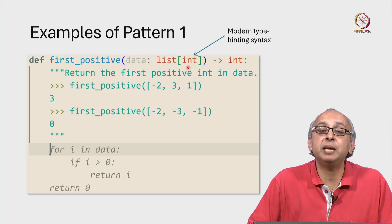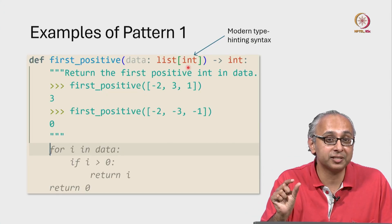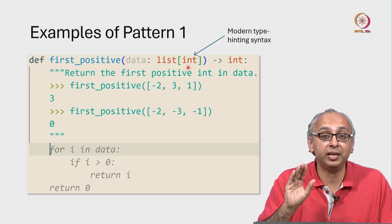So this is the type hint for saying that this is in fact a homogenous list. It's a list of integers.